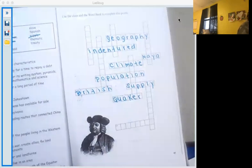Number 15. An important system of overland trading routes that connected China and Europe. That's going to be the Silk Road.